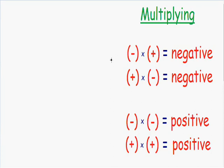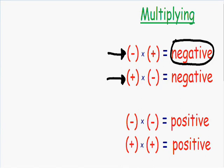The first thing I want to talk about is when you multiply one negative number and one positive number. If you multiply a negative number times a positive number, you get a negative answer. A negative times a positive is going to be negative. And a positive times a negative is also going to give you a negative answer. When you multiply one positive number and one negative number, you're going to get a negative answer.